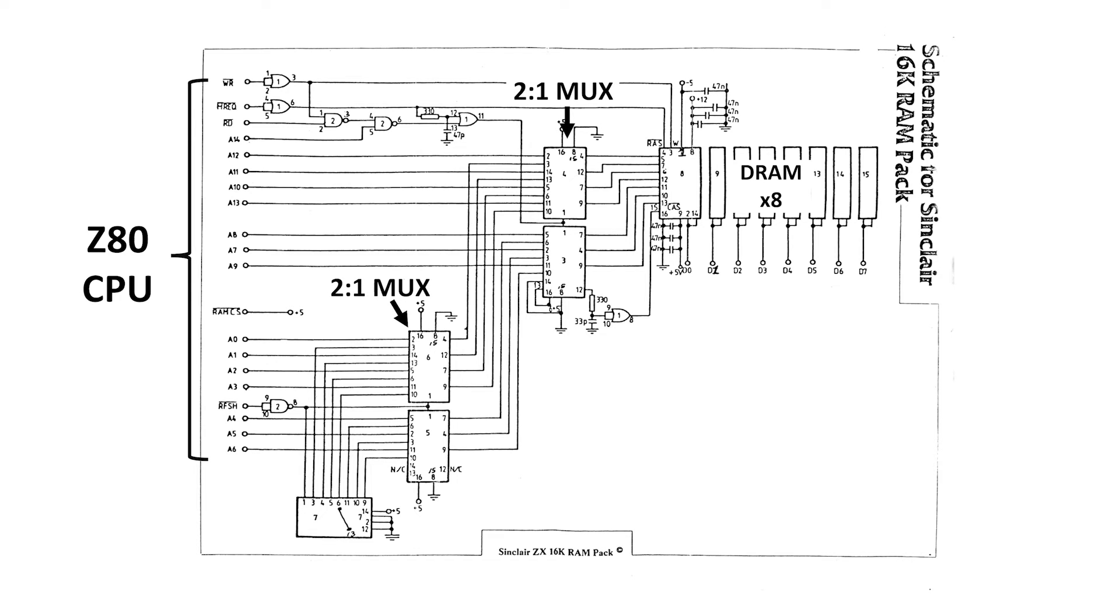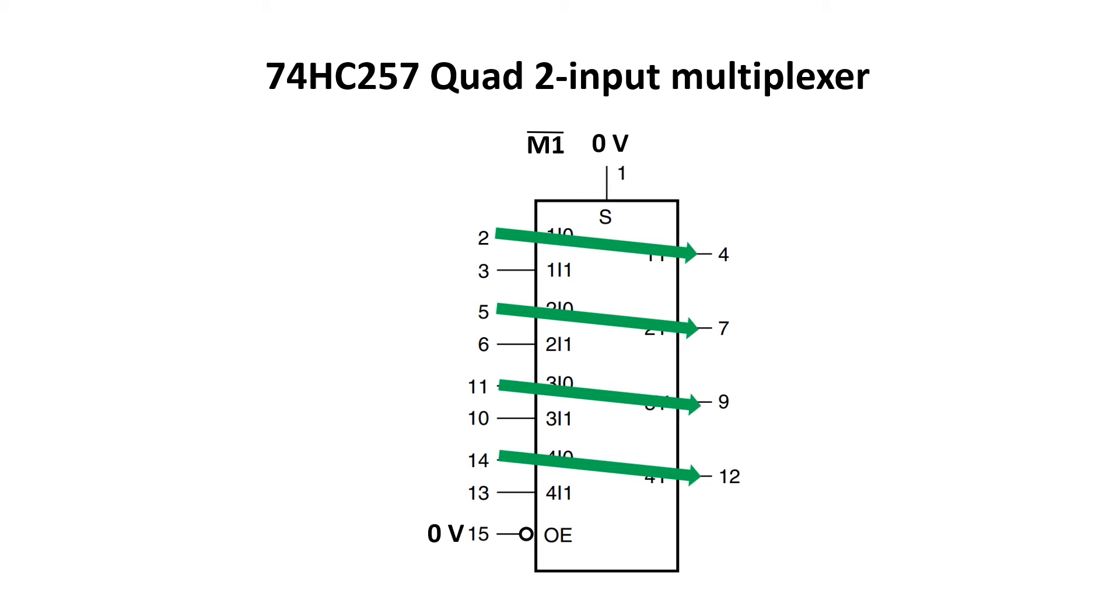Then, we have two sets of 2-to-1 multiplexer pairs. Again, these are the 74LS157s that we saw in the ZX80 design. Put simply, when select is low, one set of inputs is routed to the output, and when select is high, the other set of inputs are connected to the output.